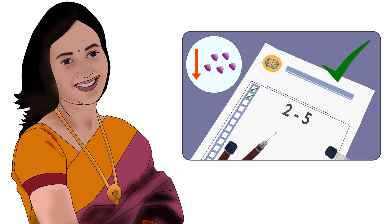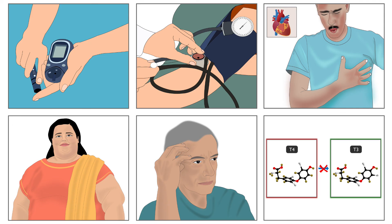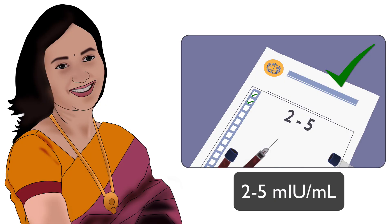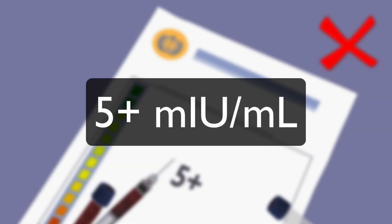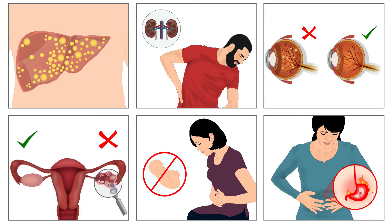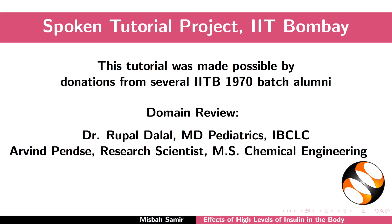Hence, it is important to keep your insulin levels under control. Insulin levels can be checked before all these harmful effects are manifested. A blood test for fasting insulin should be done. Fasting insulin in healthy individuals should be between 2 to 5 MIU/mL (milli-international units per milliliters). Anything above 5 MIU/mL indicates increased levels of insulin in the body, which can lead to one or more health complications. Please consult your doctor before taking any tests and medications. This brings us to the end of the tutorial. Thank you for joining.